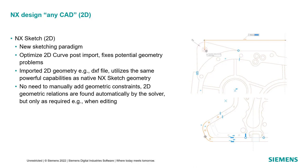This imported 2D geometry inside of the sketch utilizes the same powerful capabilities as if the sketch itself were native. The key to the NX sketch tool is that you don't have to manually add any geometric constraints — all 2D geometric relations are found automatically by the brand new solver, and these relations only appear when they are required, such as when you're editing a curve. Let's take a look at an example of bringing 2D data into NX and working with it effectively.